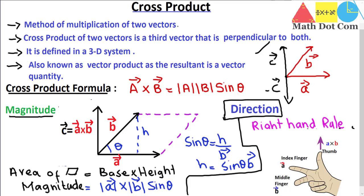Then the thumb will point in the direction of the cross product A×B. Using this method you can easily select whether to use A×B or minus A×B. Once you have both the magnitude and direction of the resultant vector, you can fully determine the cross product of two vectors.